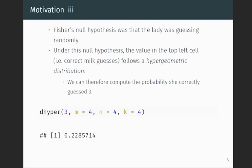And remember the d functions, what they do is that they compute the density or the probability mass function. So in this case, it computes the value of the probability mass function at 3. And the parameters of the hypergeometric distribution are set as follows: m is equal to 4, n is equal to 4, and k is equal to 4.